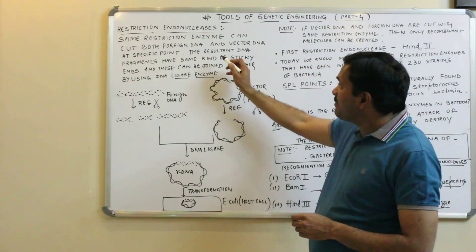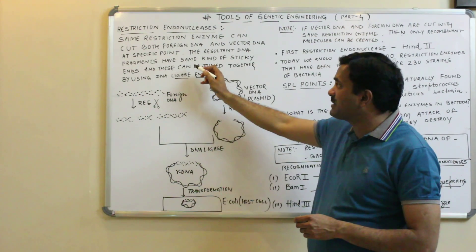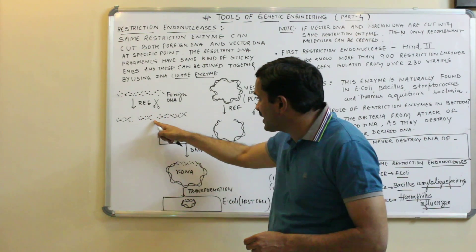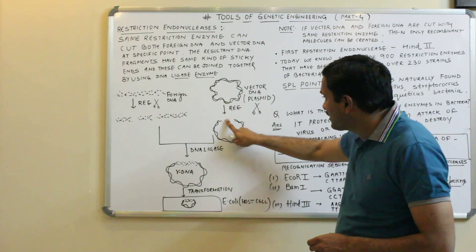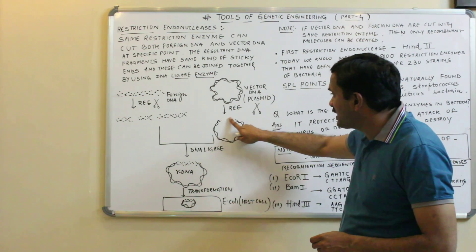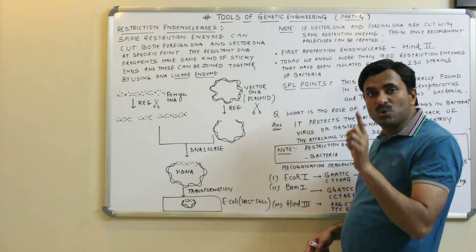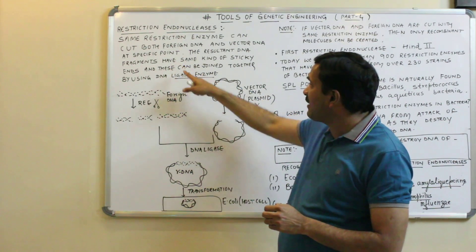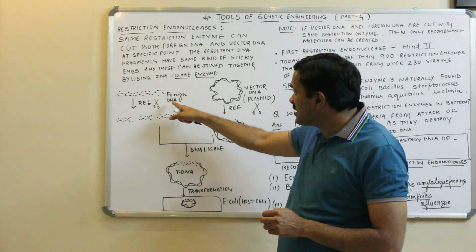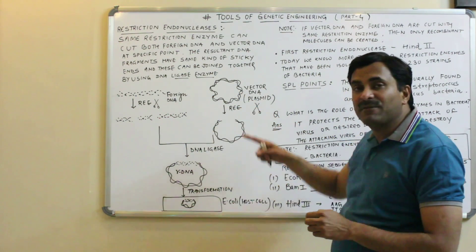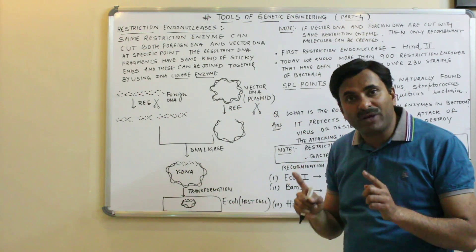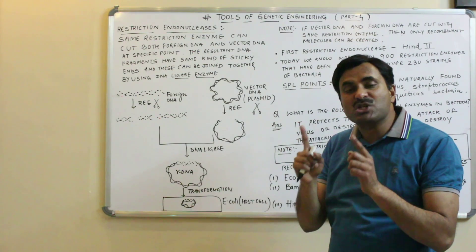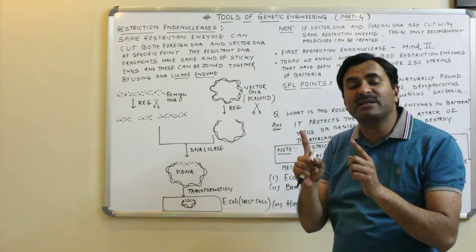As a result, the DNA fragments produced — the resultant DNA fragments — you can see that the foreign DNA has been cut here and the vector DNA has also been cut here. Because the same restriction enzyme is used, the resulting DNA fragments have the same kind of sticky ends. Whenever the restriction endonuclease enzyme performs its action, sticky ends are produced, which are the overhanging stretches.